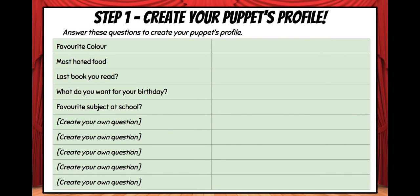On the next slide you need to answer more questions: favourite food, most hated food, the last book they read, what they want for their birthday, their favourite subject at school. Then you need to come up with five of your own questions to ask your puppet to complete their profile.